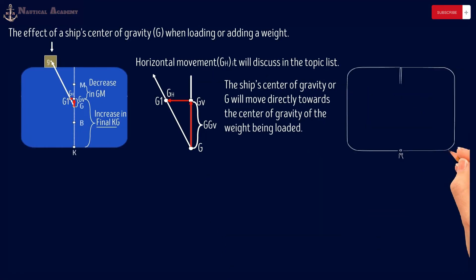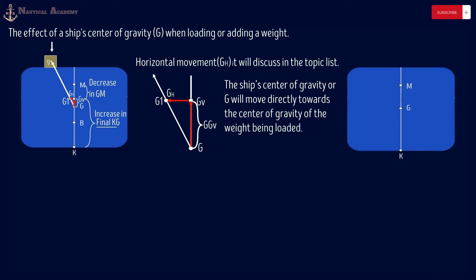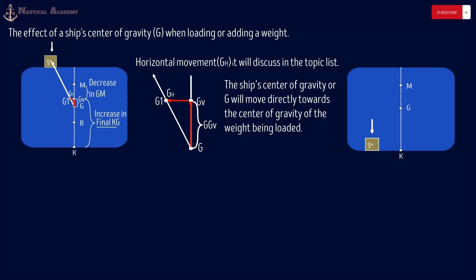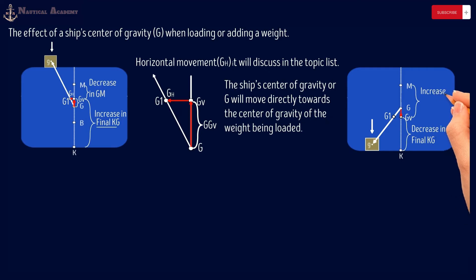The next scenario is loading a weight in the lower hold. The ship's center of gravity is assumed to be here before loading. A weight is loaded into the lower hold with its center of gravity marked as small g. The ship's center of gravity will move directly towards the center of gravity of the weight being loaded. The new G is marked as G1, and the vertical shift of G is marked as GV. The effect will be a decrease in final KG and an increase in initial metacentric height GM.